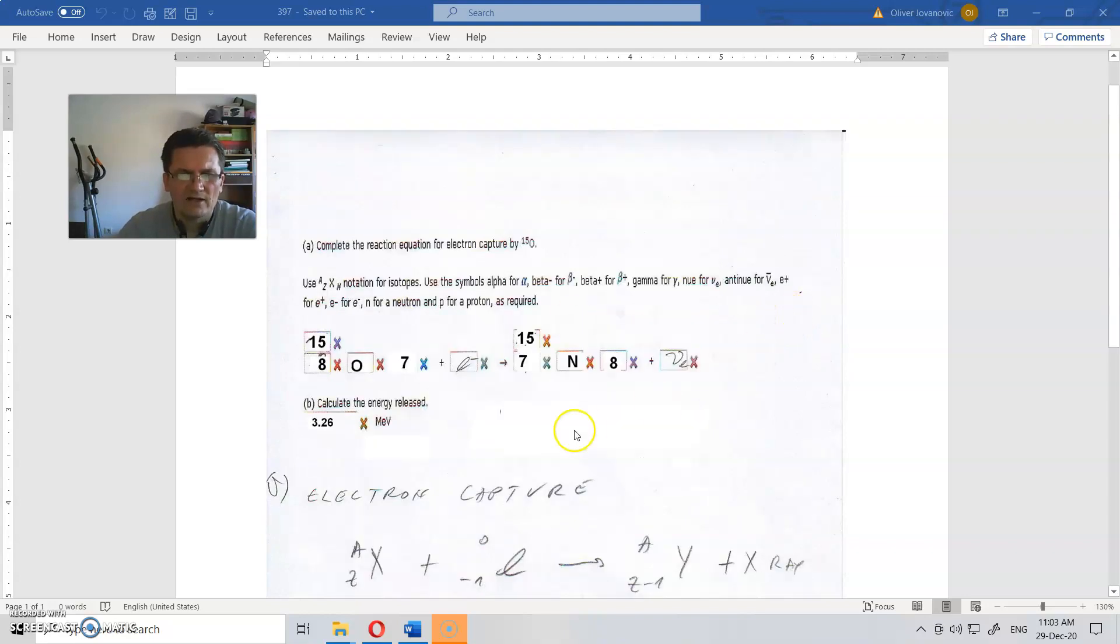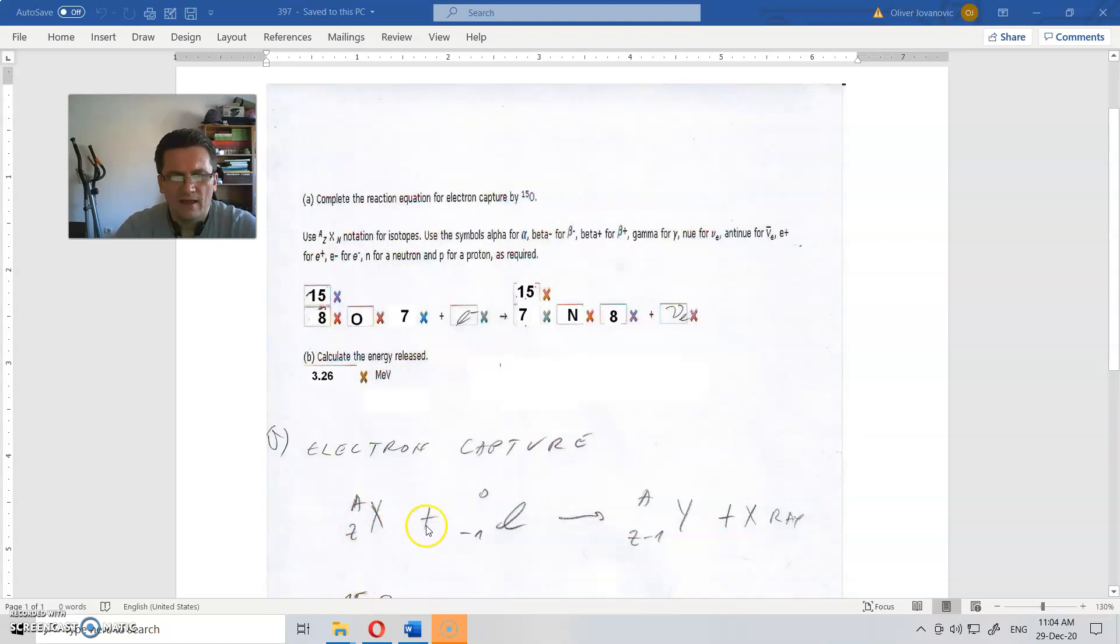So electron capture. So you could google this thing here to find what is that. So if we have electron capture, what is this here? This here is some element, in this case electron. This here is number of neutron and proton put together. This here is number of protons only or the number of electrons. And plus this is the electron. There is no nucleuses in the electron so it is zero for that. But here is minus one.